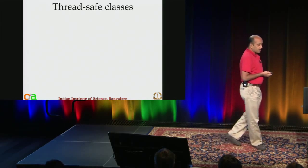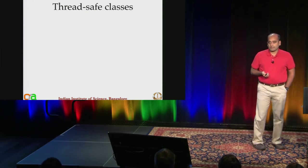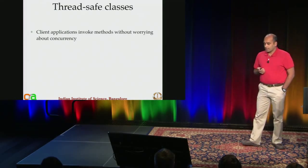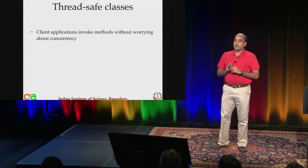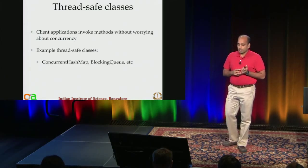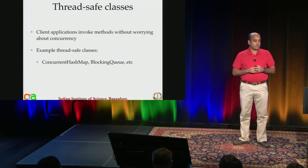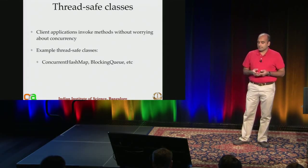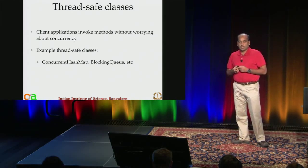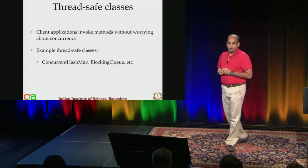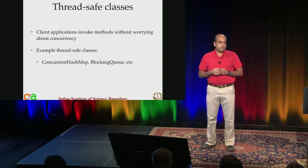So the question is, what is a thread-safe class? A thread-safe class is one where client applications can invoke methods without worrying about concurrency issues — as if they are writing sequential code. Examples of thread-safe classes include ConcurrentHashMap and BlockingQueue from the JDK.